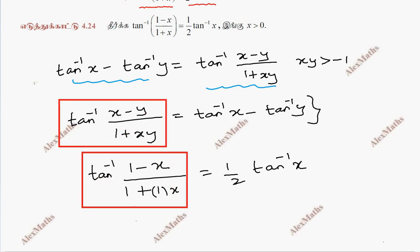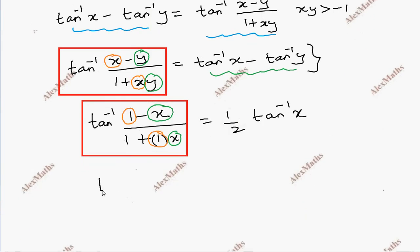That means x equals 1 and y equals x. With denominator 1 times x, we apply the formula to get: tan inverse 1 minus tan inverse x equals half tan inverse x.